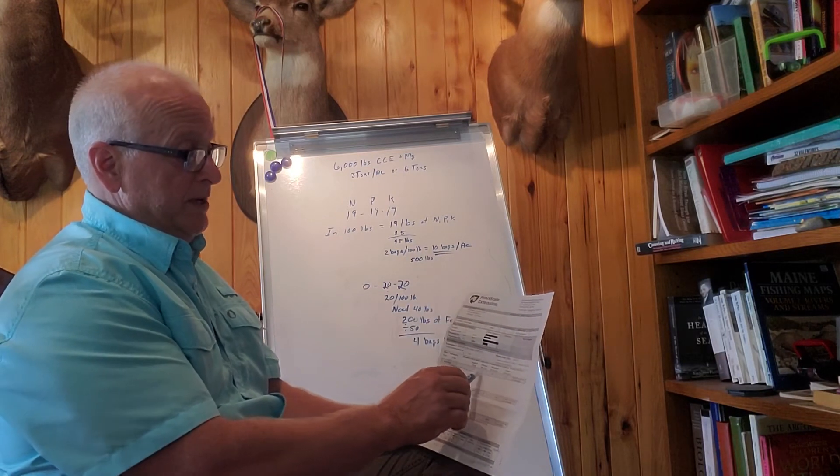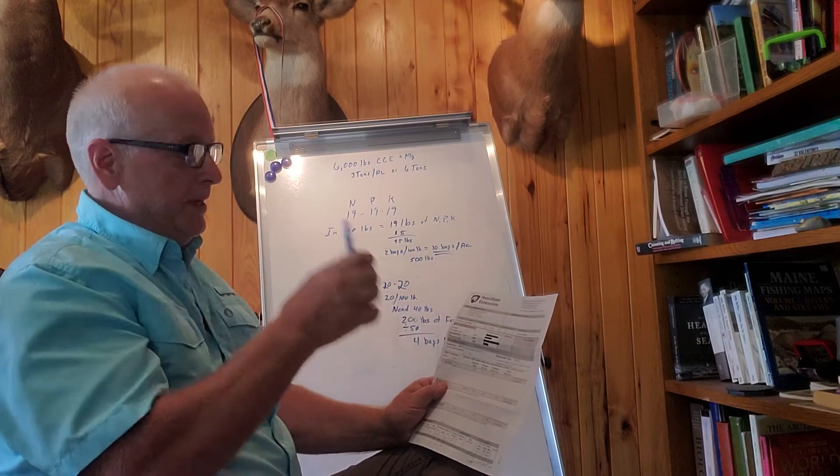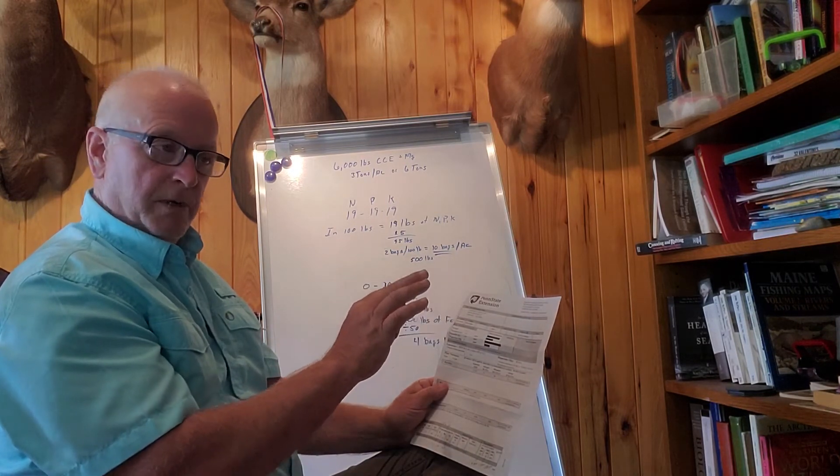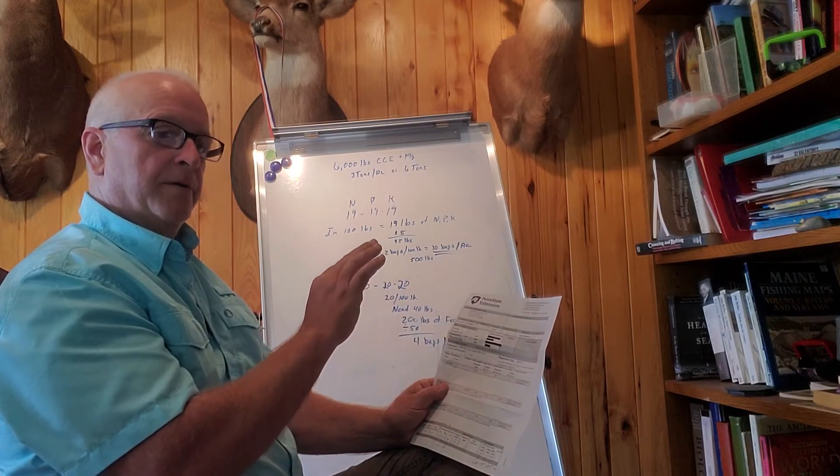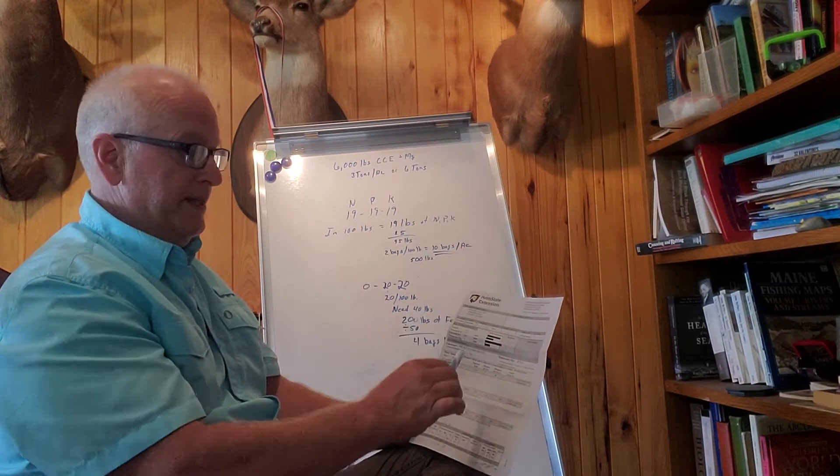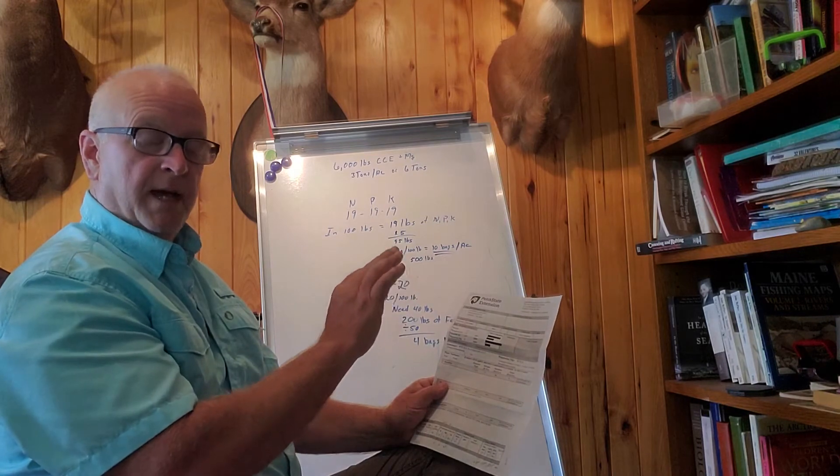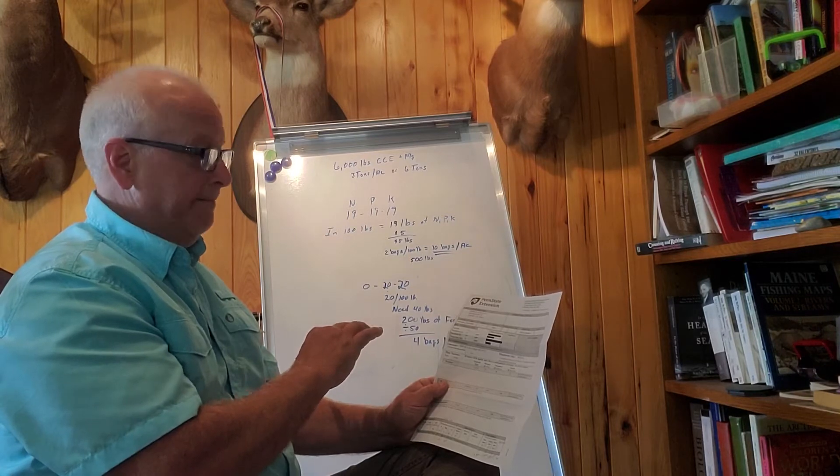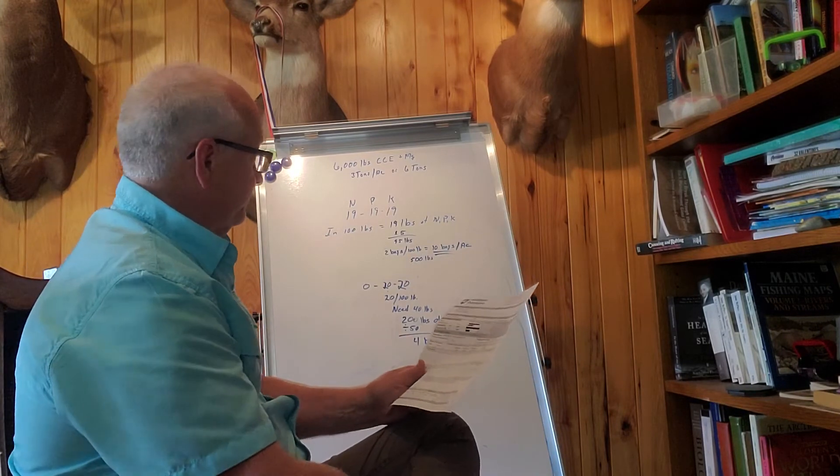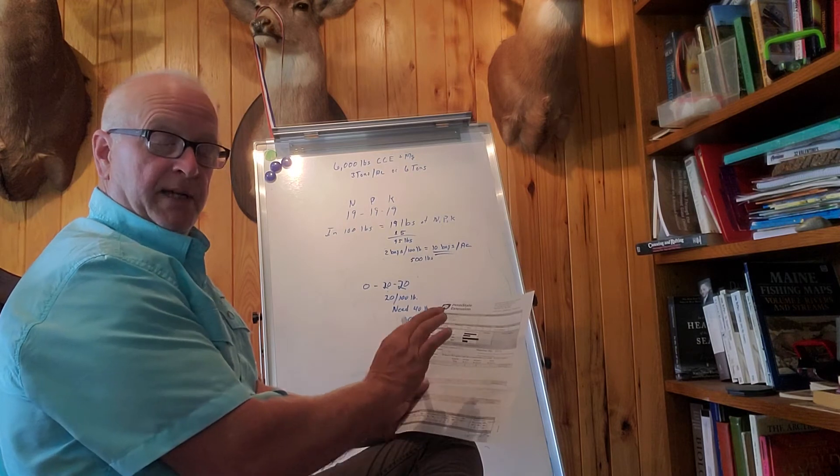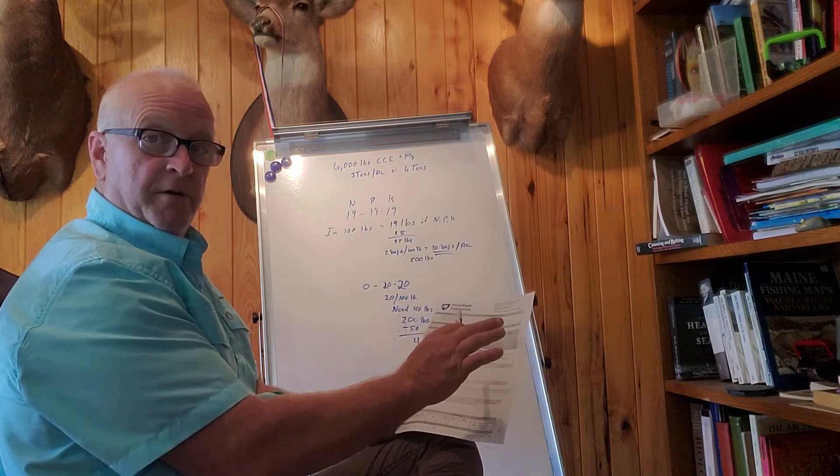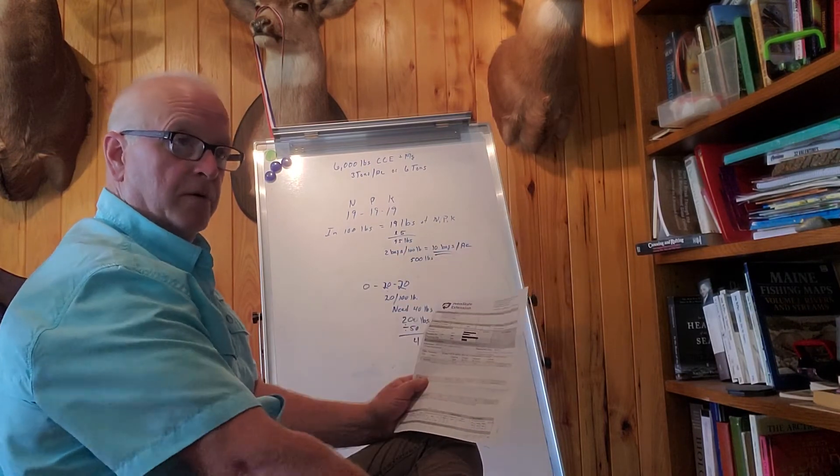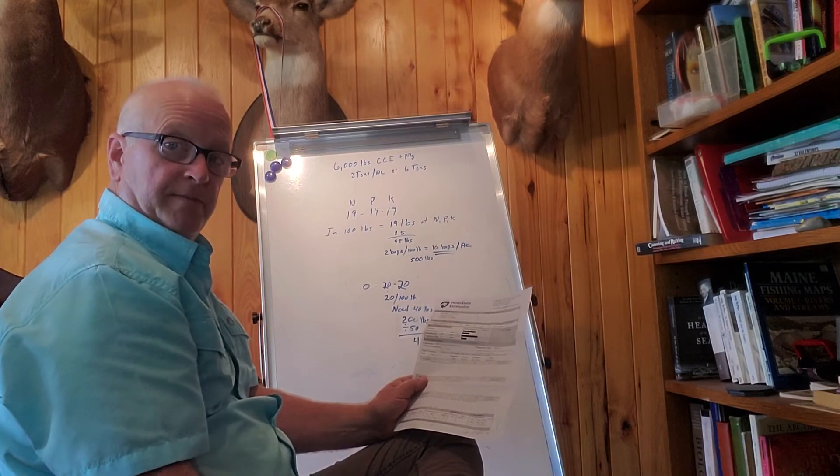But when you read these numbers, keep in mind that these numbers represent the amount of fertilizer you want to put on that will—any more than this number is not likely to give you any gain of growth and yield. These numbers mean that it's enough to grow your crop, but more isn't going to give you more benefit economically.